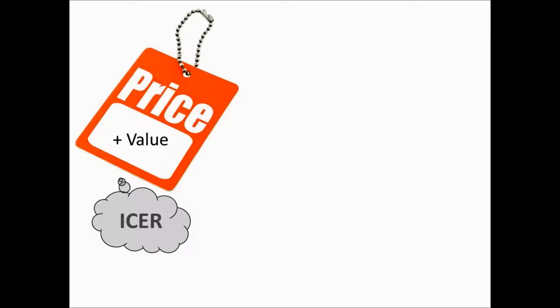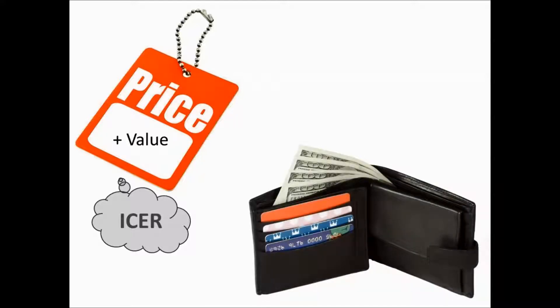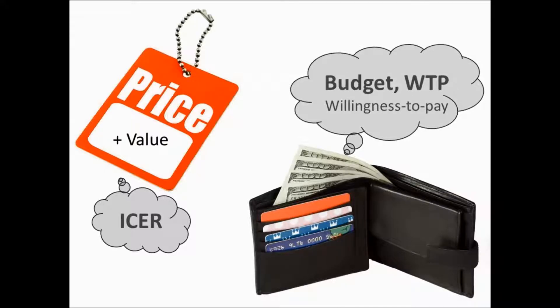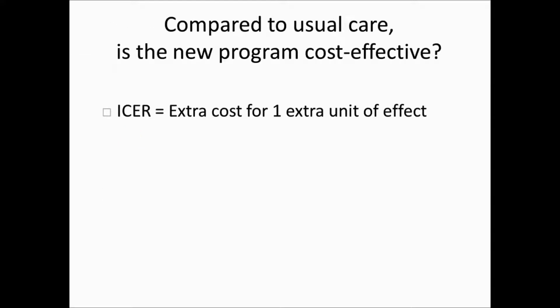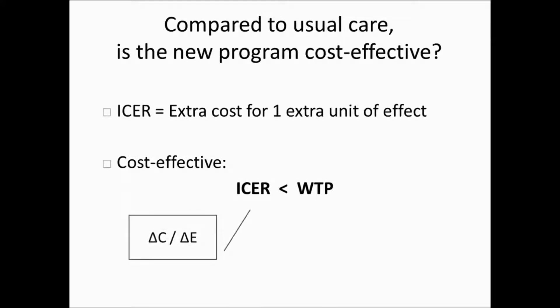Focusing on ICER, the equation is simply the difference in cost divided by the difference in effect — delta C divided by delta E. That formula tells us the difference in cost between the two groups per difference in effect. That is how we look at both cost and outcome together. Linking back to the buying analogy: you have more than one option, you look at the price, you look at what you're going to get — that is your ICER, combining both parts into one estimate.